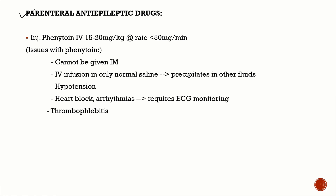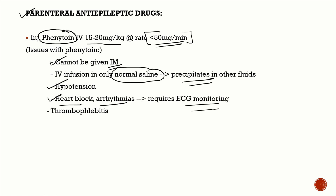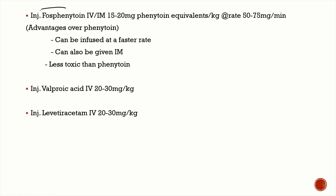Phenytoin is given as an IV infusion at 15 to 20 mg/kg at a rate of less than 50 mg/minute — do not infuse at a faster rate. Important issues with phenytoin: it cannot be given IM, the carrier fluid must always be normal saline as phenytoin precipitates in other IV fluids, it can cause hypotension, heart block, and arrhythmia, so ECG monitoring is required. It can also cause severe thrombophlebitis.